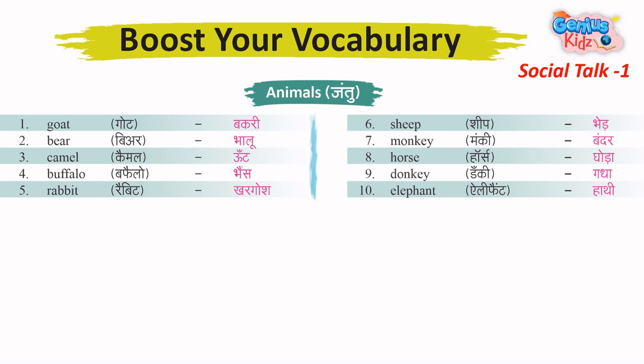5. Sheep – Bhed. 6. Monkey – Bandar. 7. Horse – Ghoda. 8. Donkey – Gadha. 9. Elephant – Haathi.